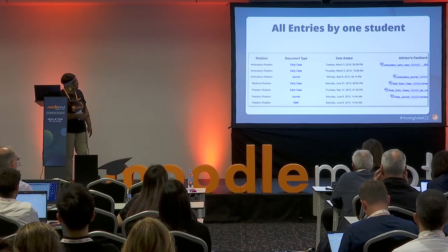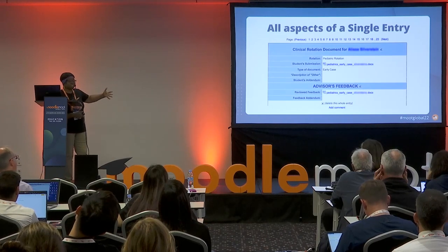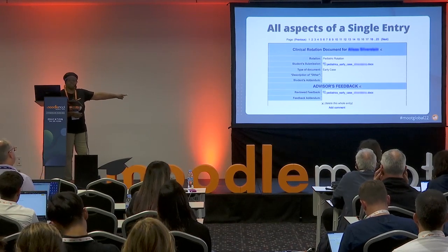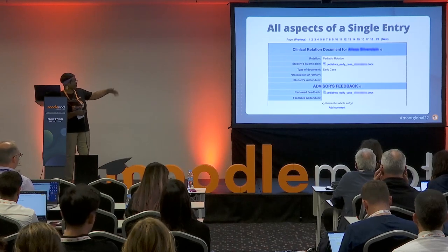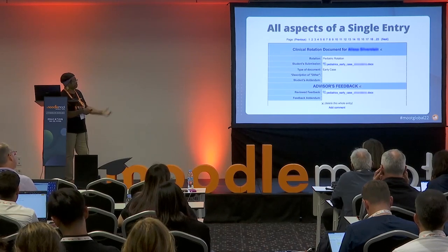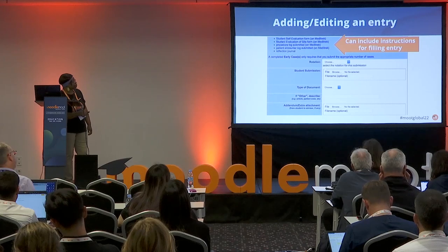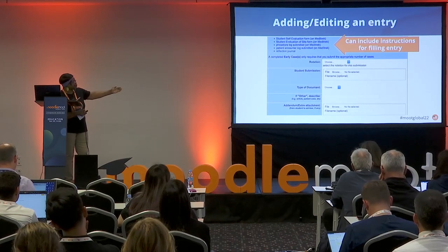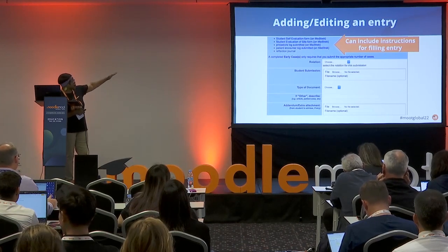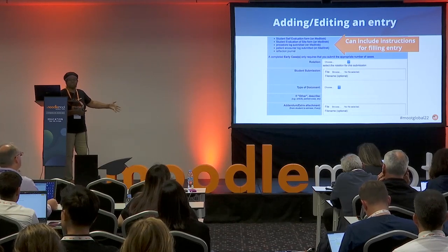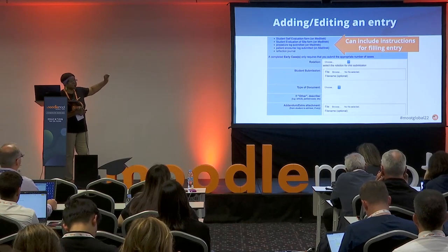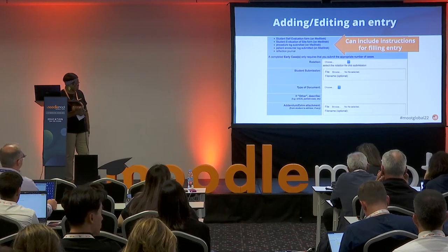In the single entry view, you can see more detail. The advisor can provide a feedback document, and there's also a comments feature so the advisor can have a discussion with the student about that particular entry, introducing interactivity. When adding an entry, you have so much control that you can put instructions right on the form — students know very specifically how to name the file and what information to include. It's your form; whatever you want to put on it is up to you.